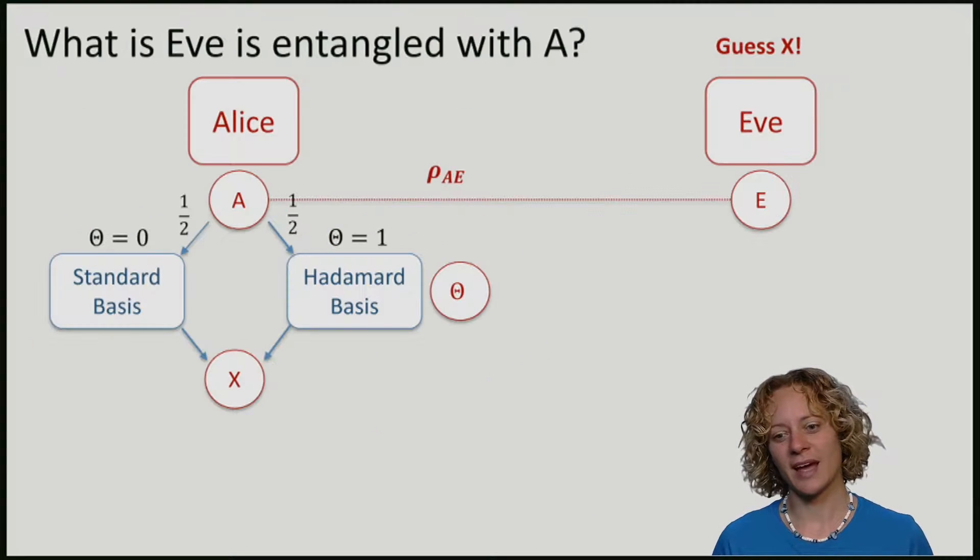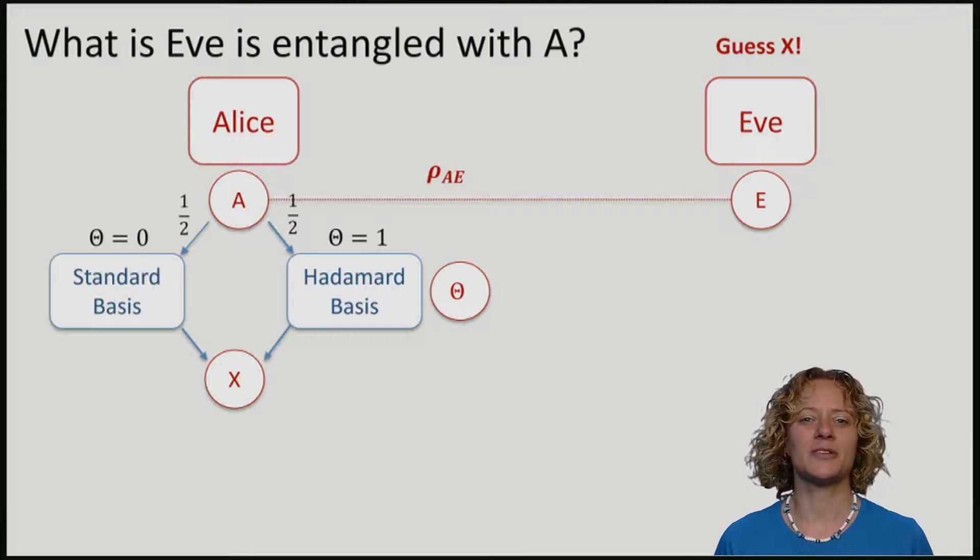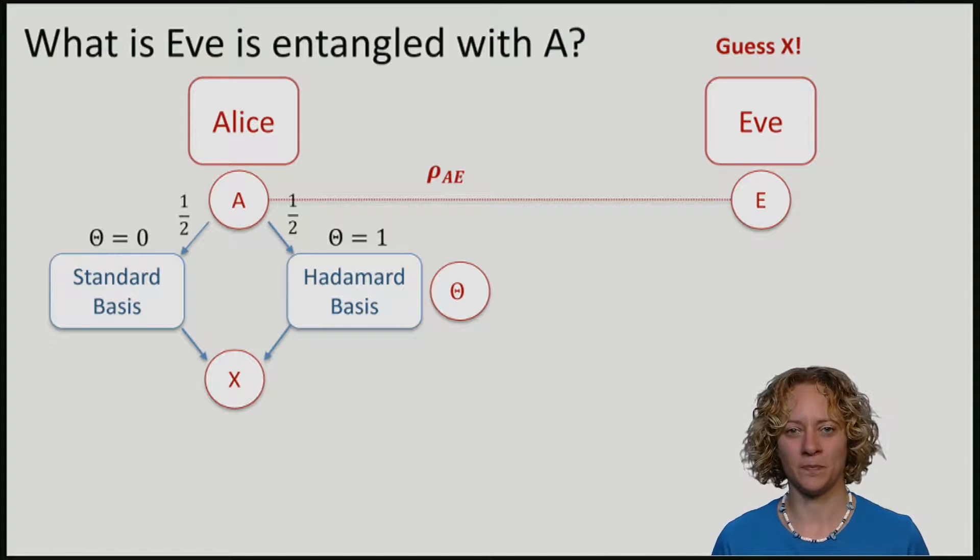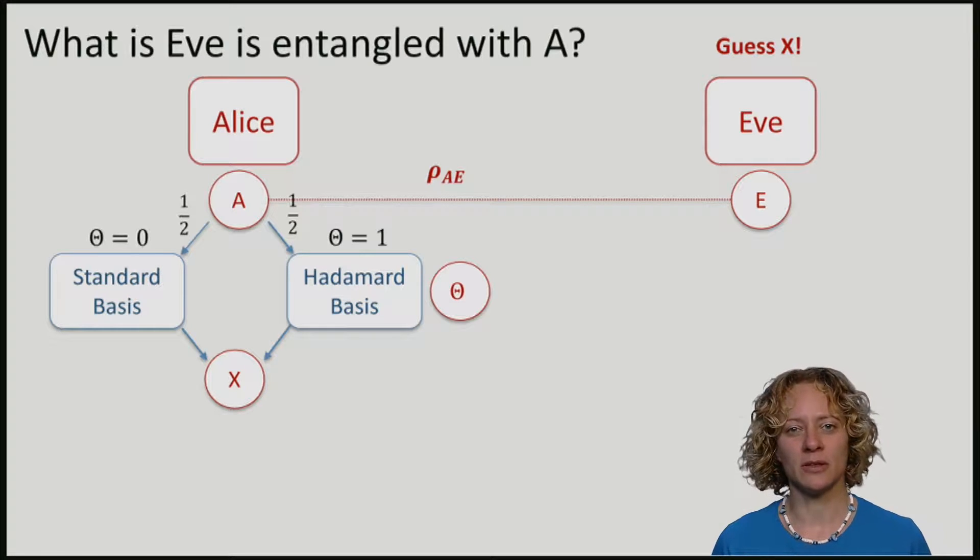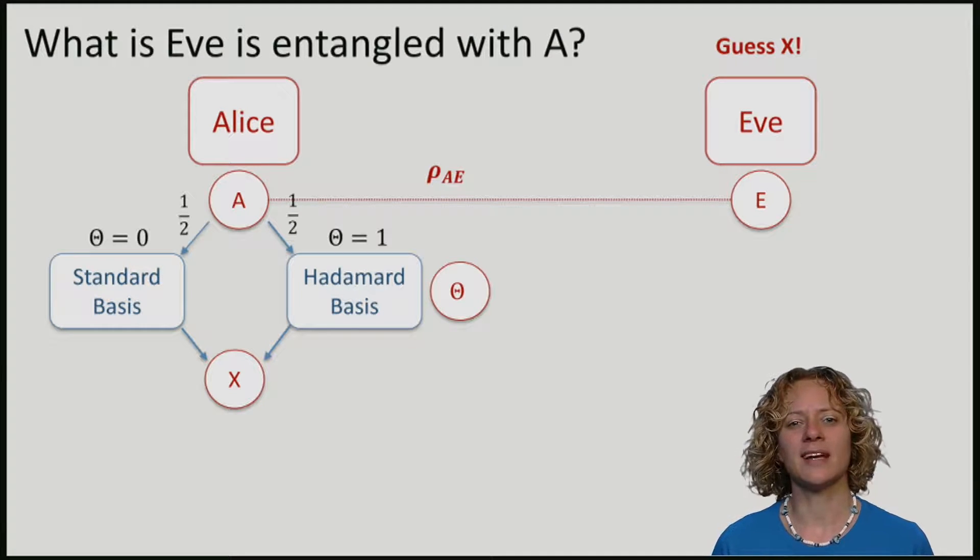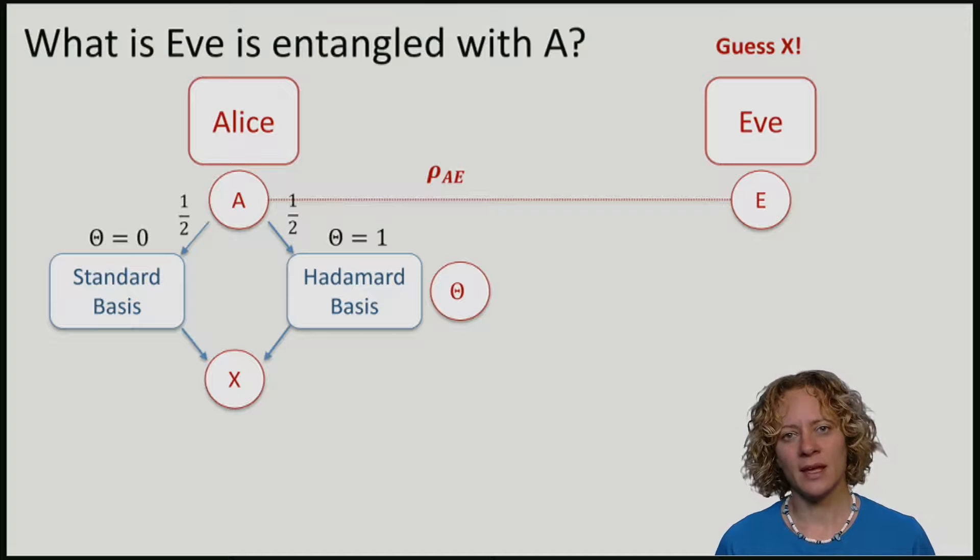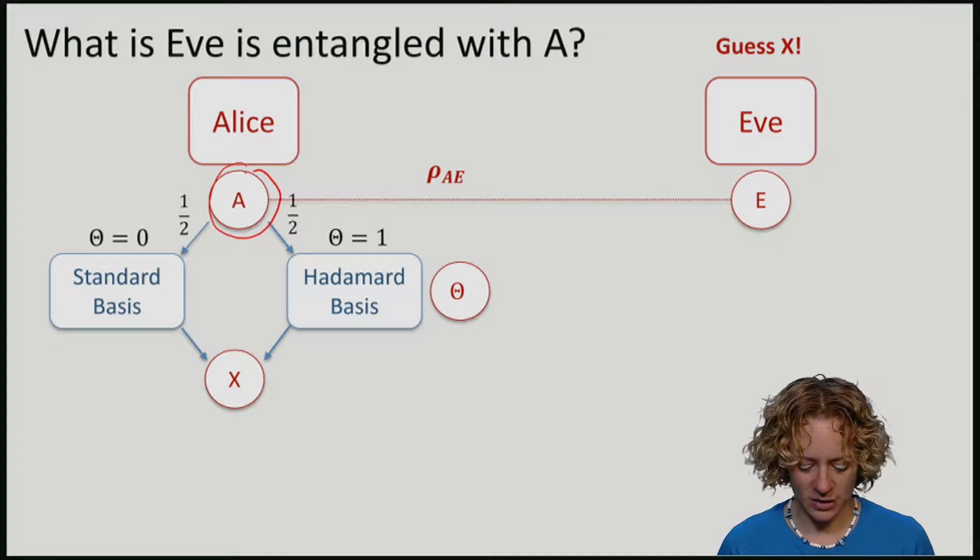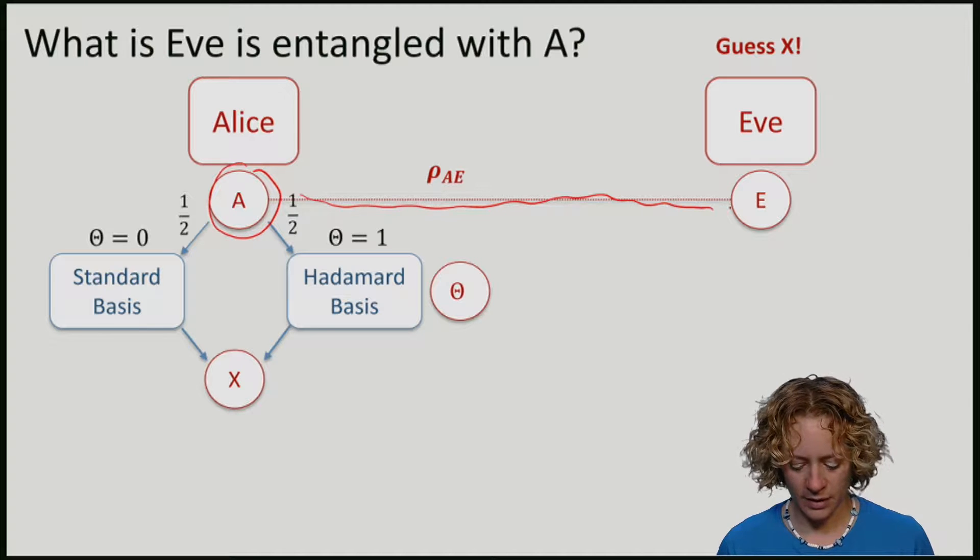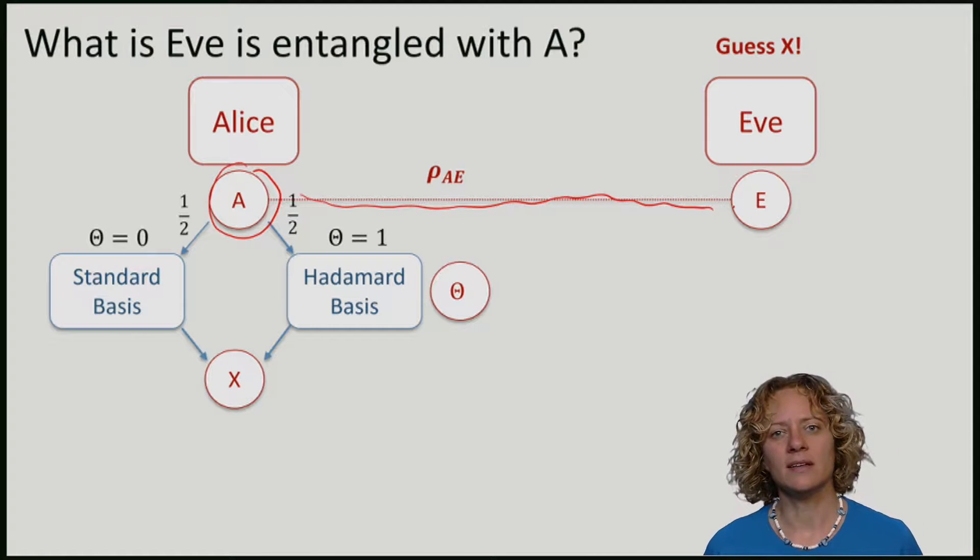So far, I have said that Eve may just have some classical information. But you might be wondering what actually happens if Eve has quantum information or Eve has entanglement with A. This means that when she prepares the state rho A and sends it to Alice, rho A is actually entangled with a system E that Eve keeps.